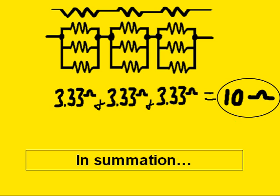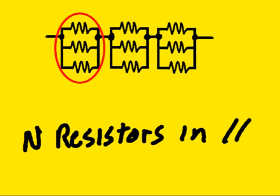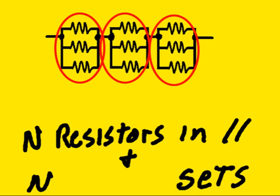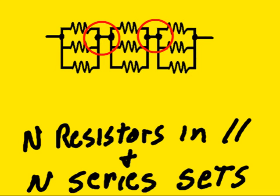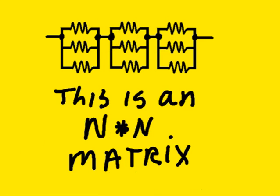So, in summation, we have n resistors in parallel, n being 3 in this example, and n sets. And these sets are in series, so we call them series sets. So, we have n resistors in parallel and n series sets. This is an n by n matrix.